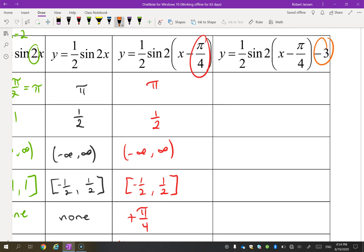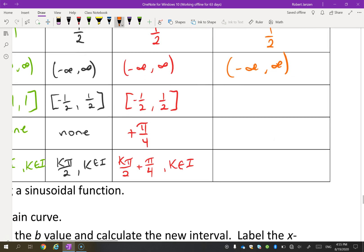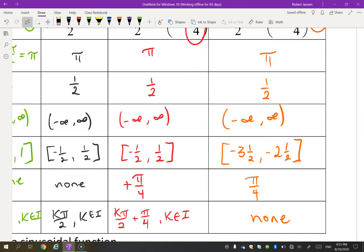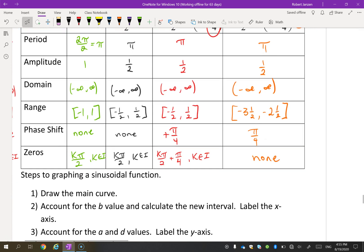All right, last one, what is this going to do? This is going to move it down 3. Period won't change, amplitude won't change, domain won't change, but the range will. Well, if we take this range and move it down 3, you're going to be negative 3.5 to negative 2.5. The phase shift is still π/4. And what about the zeros now? Well, if the range is from negative 3.5 to negative 2.5, now there will be none. So that's a quick look at some transformations of the sine and cosine graph. Let's try and draw a few of them now.